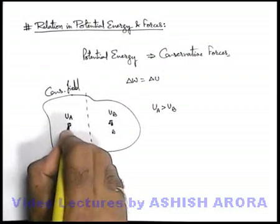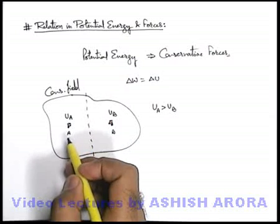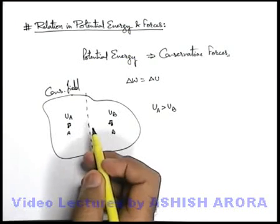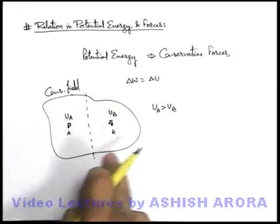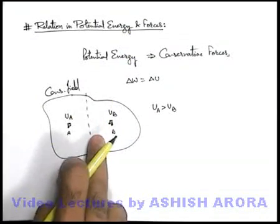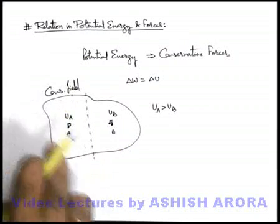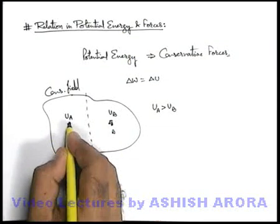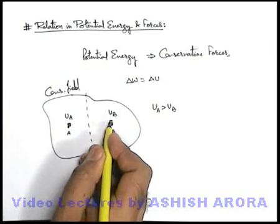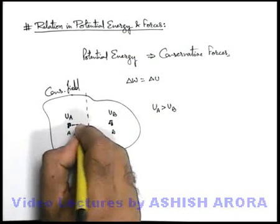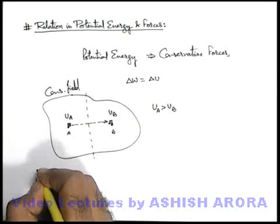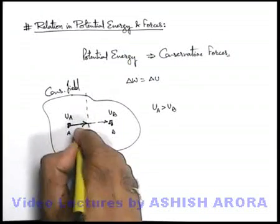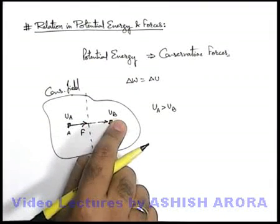If a body is placed at point A, we know that every body has a tendency to achieve the lowest possible energy state, which implies high stability. So we can say this right half of the conservative field is more stable as compared to the left half, because energies are less here. So when we place a body on the left and release it, the body will have a tendency to move directly to the lower energy states. The field will exert a conservative force toward the direction of the low energy state.